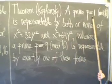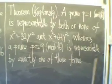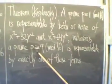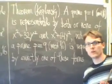Namely, that a prime congruent to 1 modulo 16 is representable by both or none of these two forms, whereas a prime congruent to 9 modulo 16 is representable by exactly one of these forms.